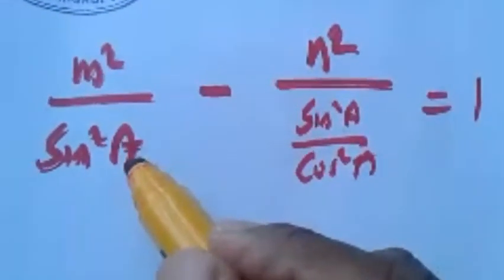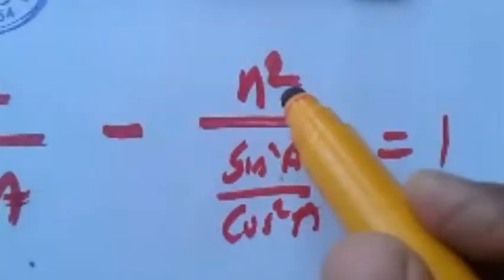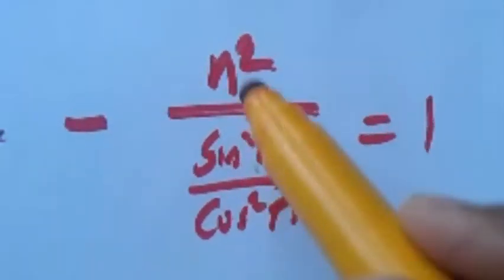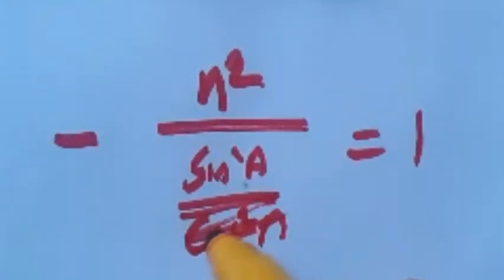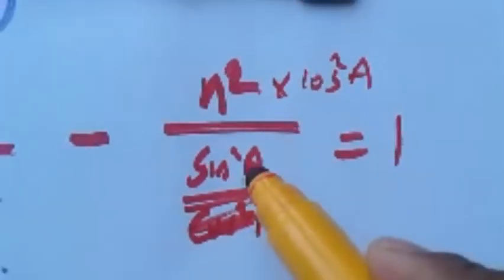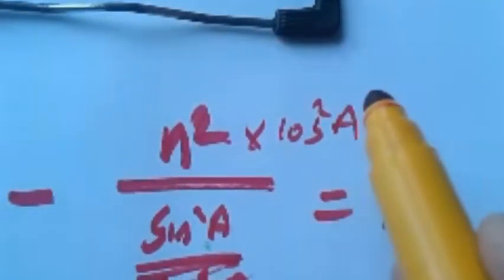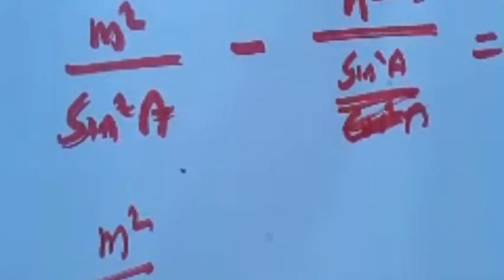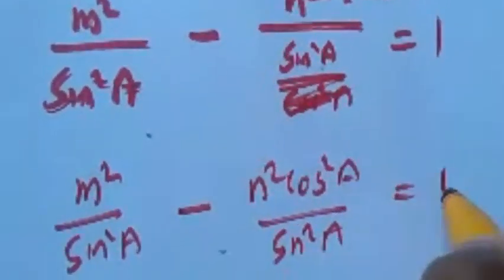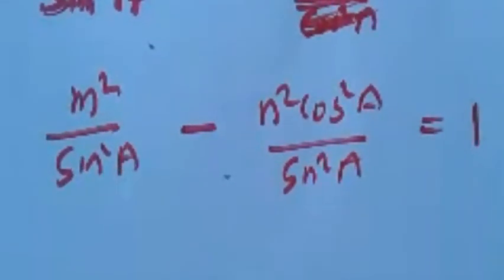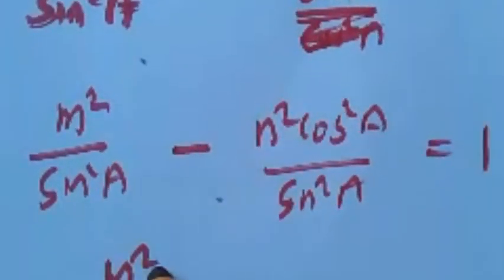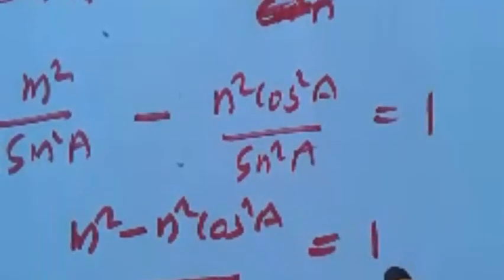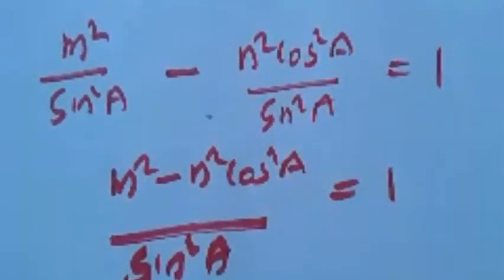We have reached this step. You know that here we can take the reciprocal and multiply: n²/sin²/cos²A becomes n²·cos²A/sin²A when you take the reciprocal and multiply. So cos²A joins with the numerator. What will remain is m²/sin²A minus n²·cos²A/sin²A = 1. The denominator is the same, so the numerator gives m² - n²cos²A = 1.